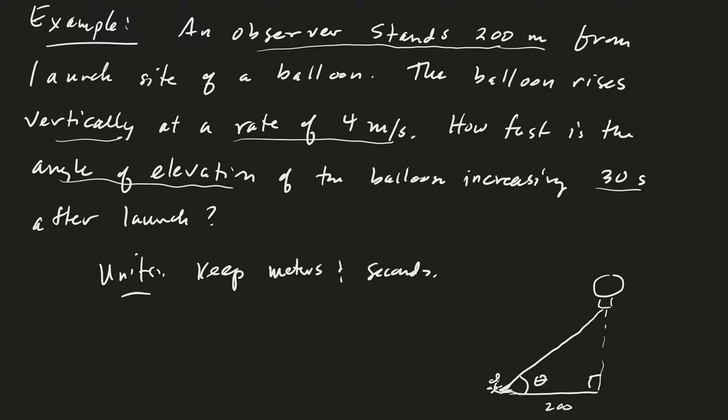And then the angle of elevation is going to be the angle the observer sees - this angle right here is going to be your angle theta. And now we also know how fast the balloon is rising, so let's go ahead and label this as h. In fact, this is going to be h(t) because the height is changing in time, but notice we're not labeling this as a function of time because it is a constant 200.